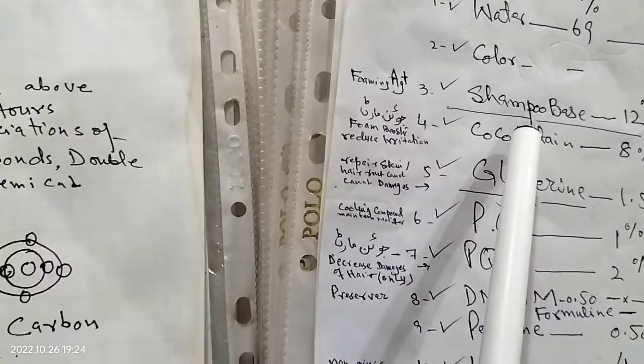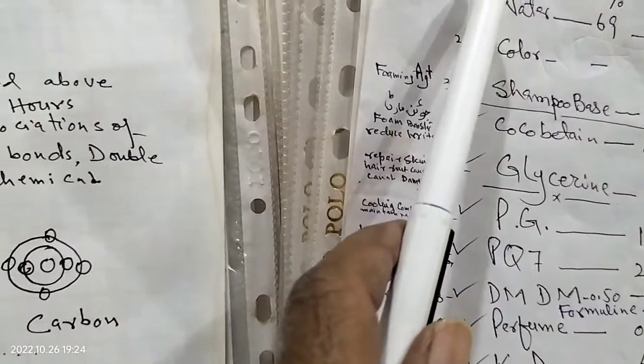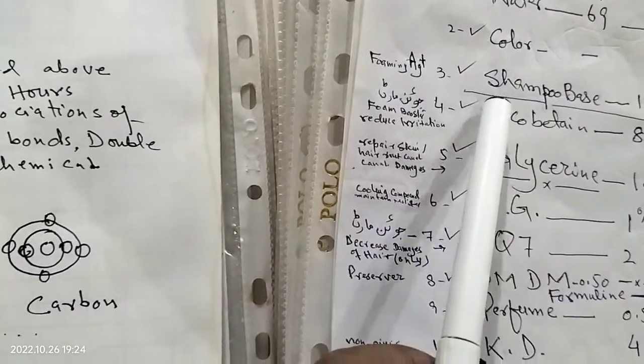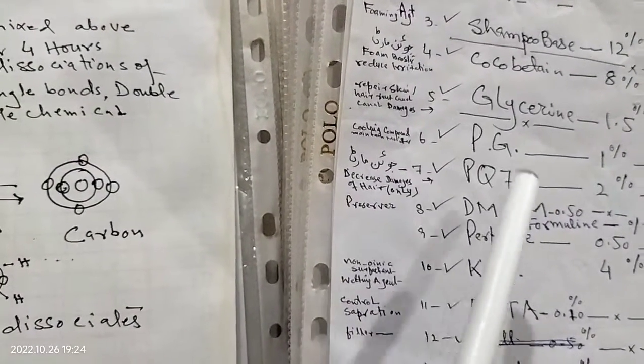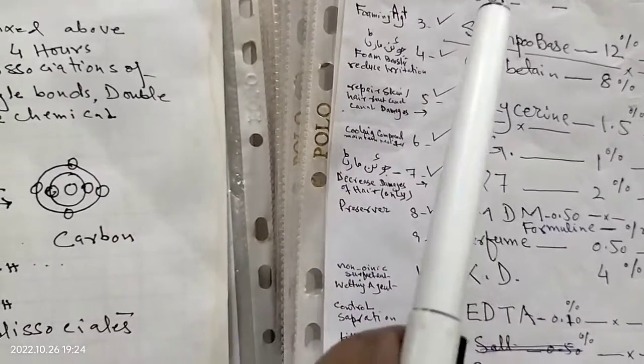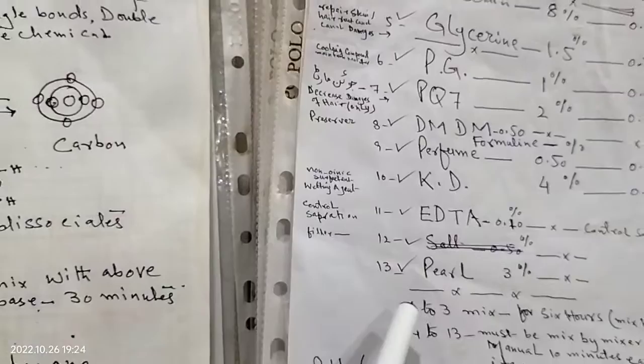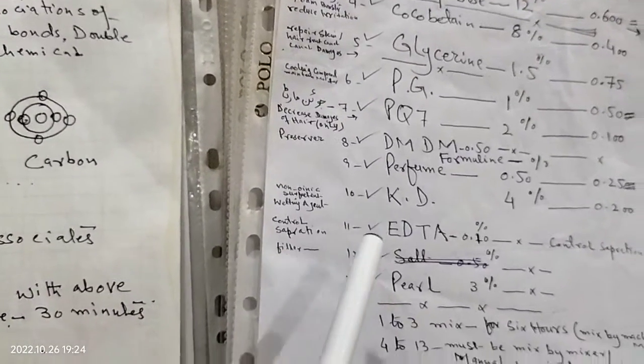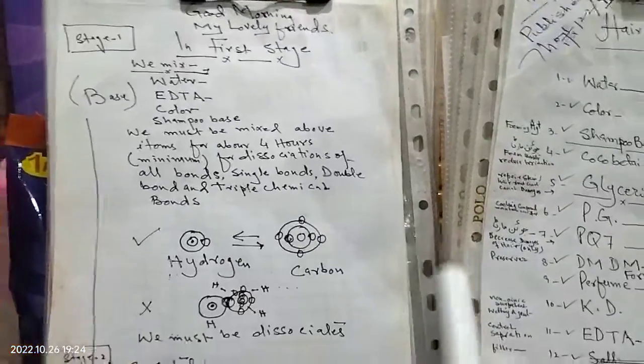After 20 minutes, after mixation of base and acid, following all chemicals must be added in compound within 15 minutes. This is the formula. This is the process of our mixing.